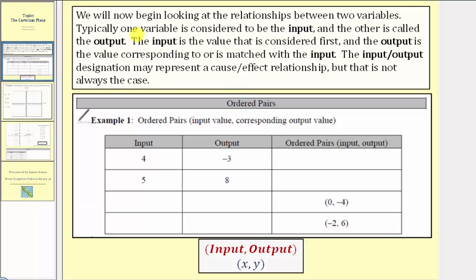We now begin looking at the relationships between two variables. Typically one variable is considered to be the input and the other is called the output. The input is the value that is considered first and the output is the value corresponding to or matched with the input. The input-output designation may represent a cause-effect relationship, but that is not always the case.